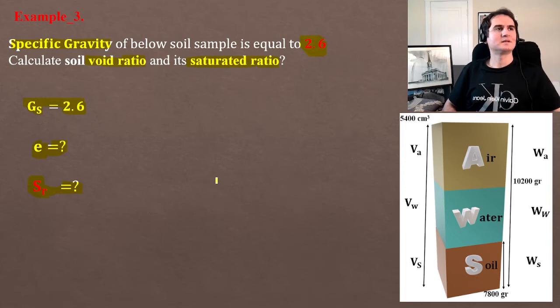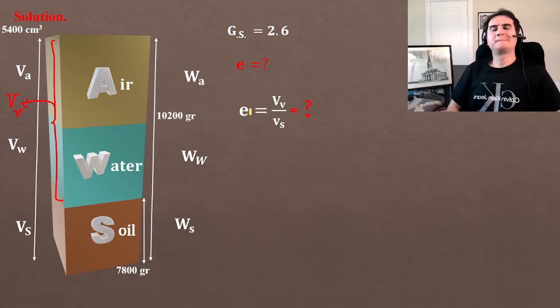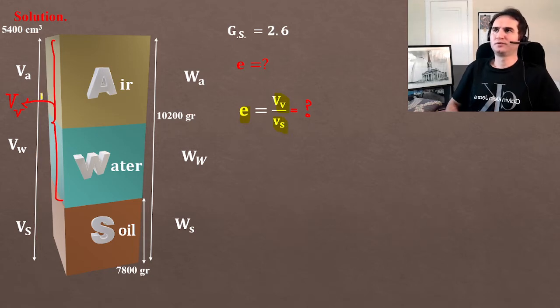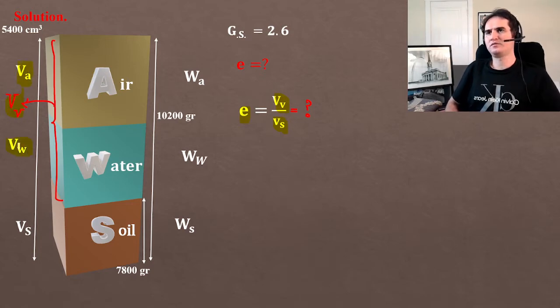Let's start our problem. We know void ratio is volume of void over volume of soil. The volume of void is a summation of volume of air plus volume of water.